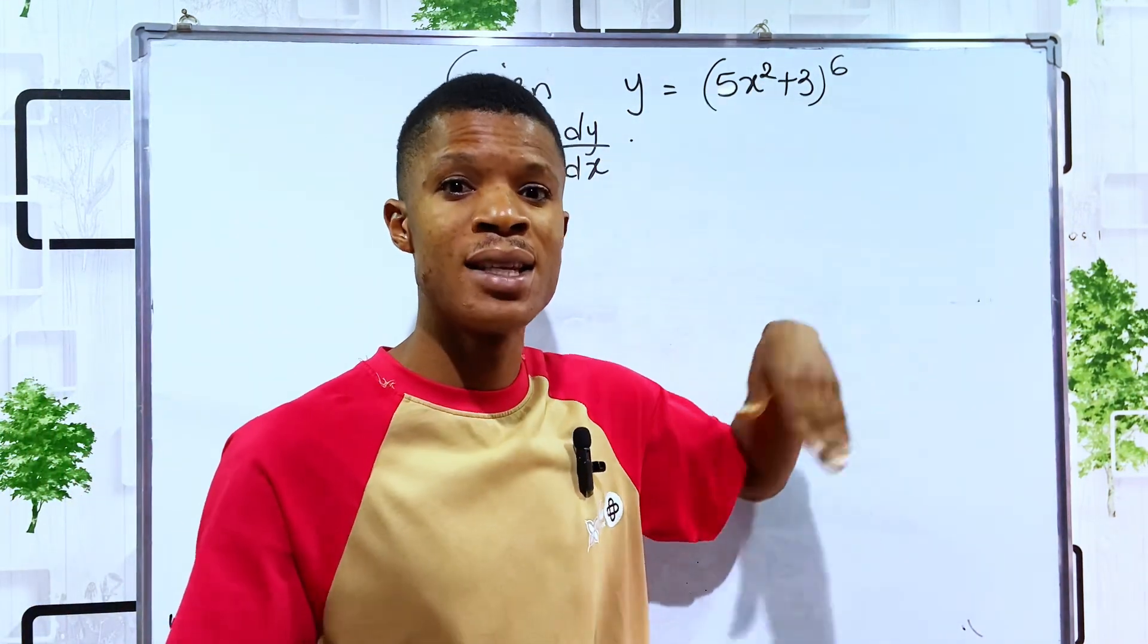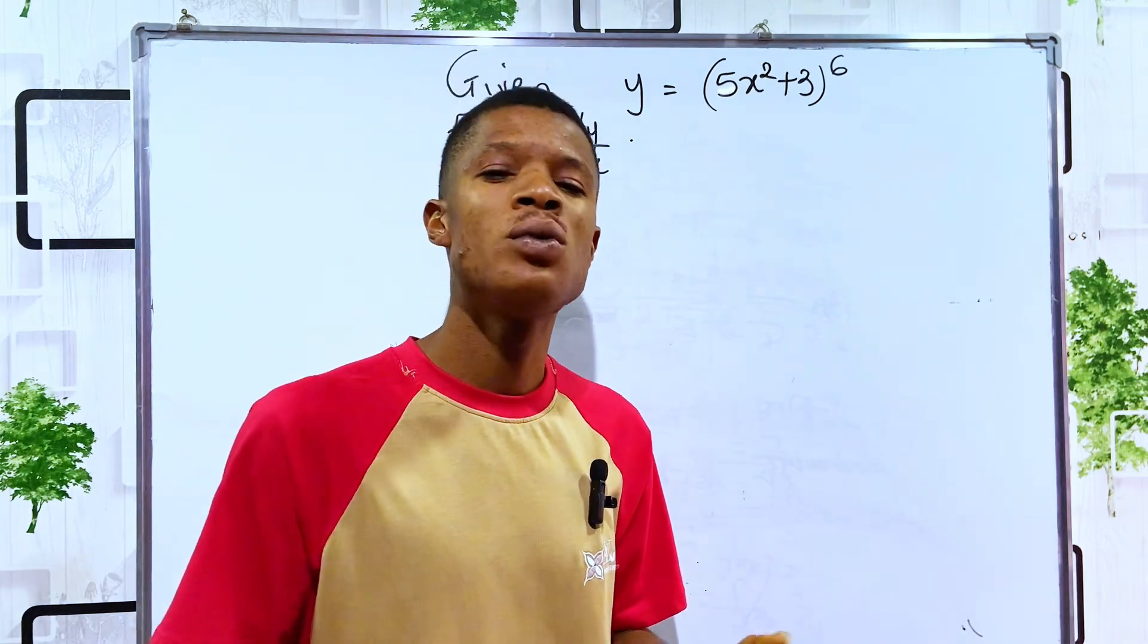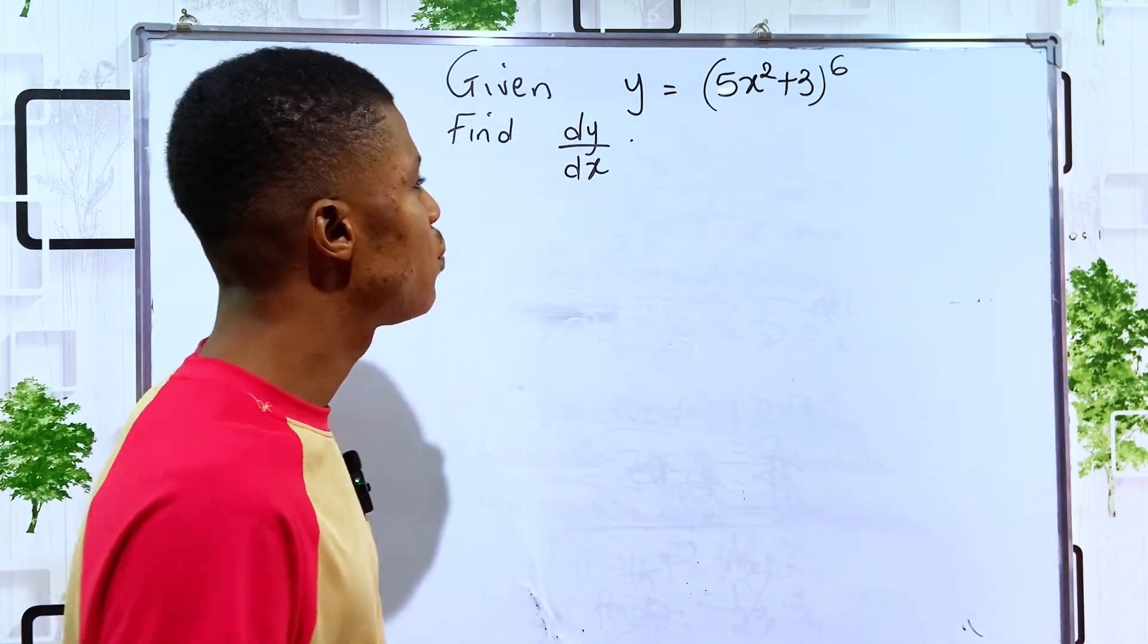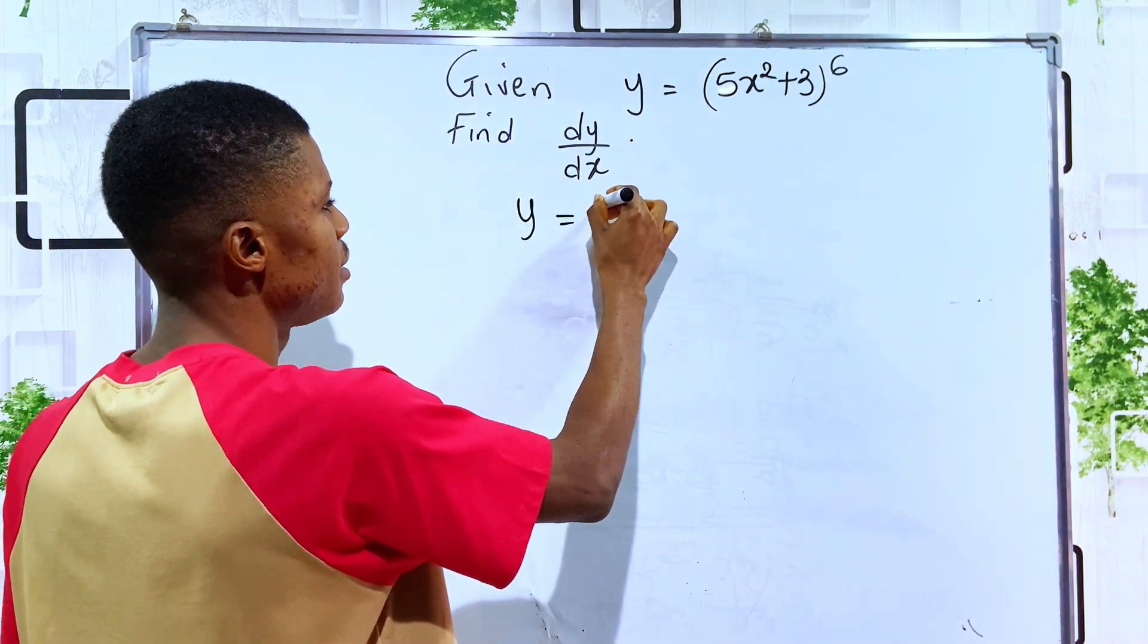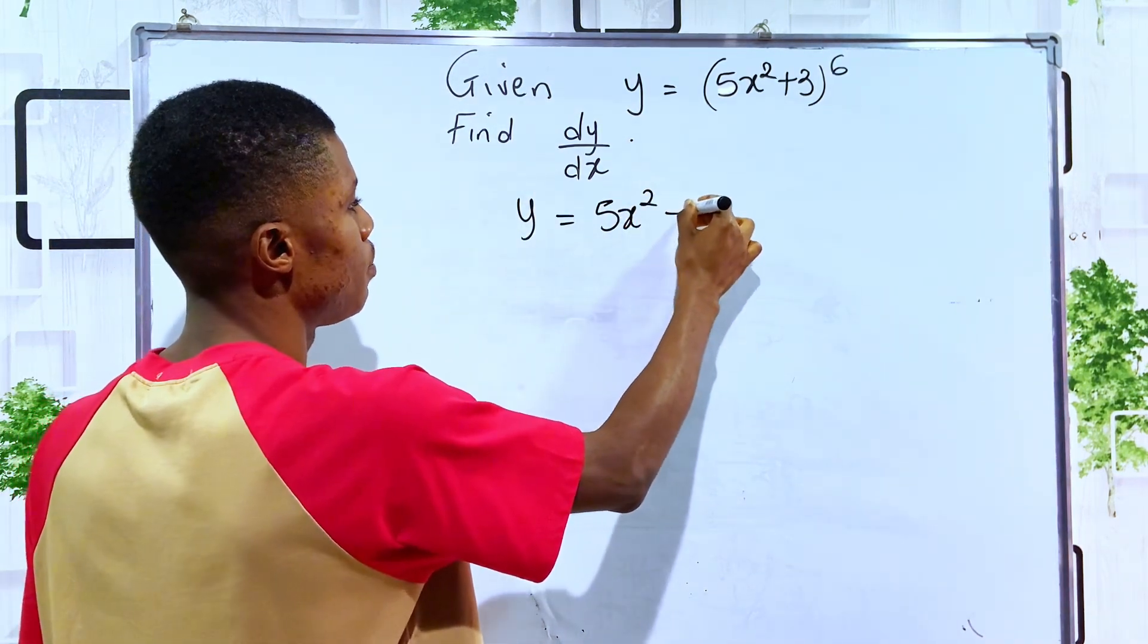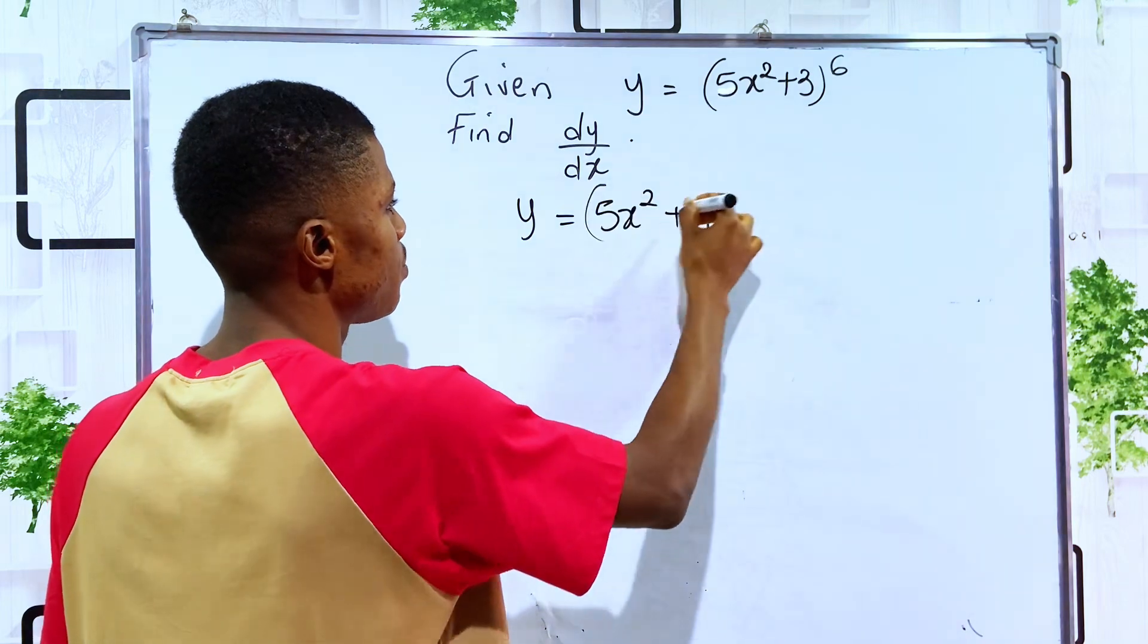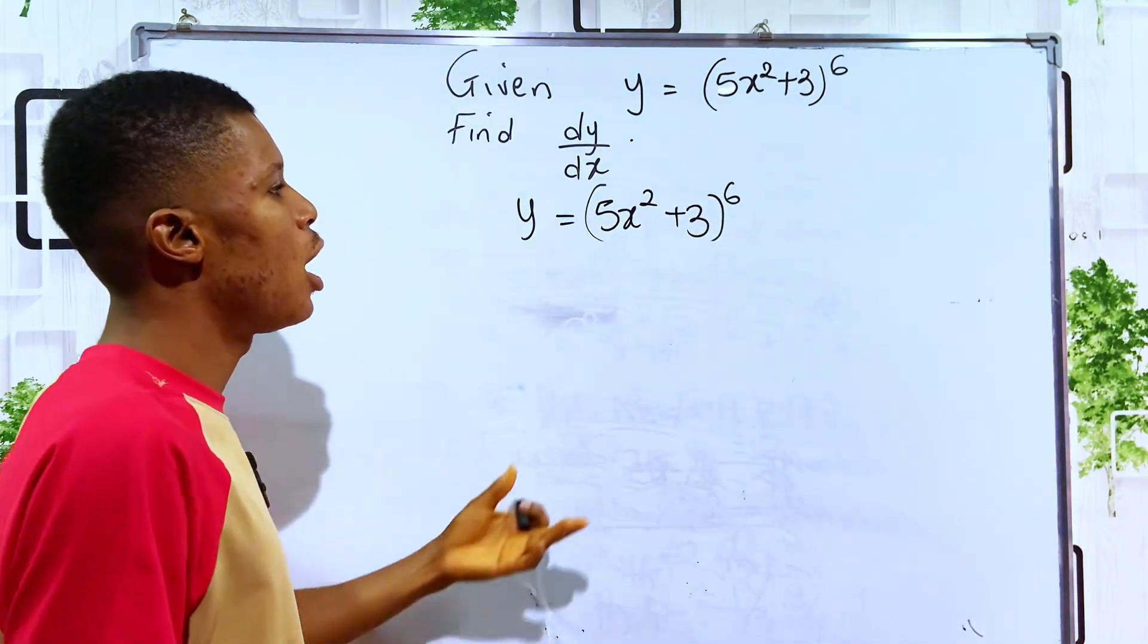But for us to differentiate this, we would need to expand this bracket into six places, which would take a very long time. So for us to do that, we just have to write that our y is given 5x squared plus 3 to the sixth power.